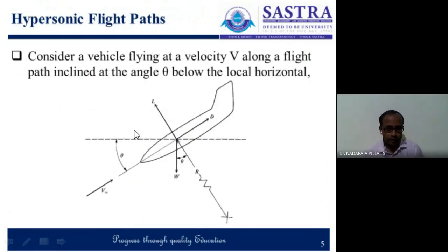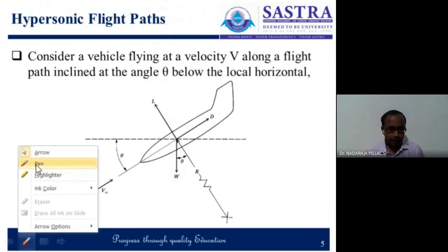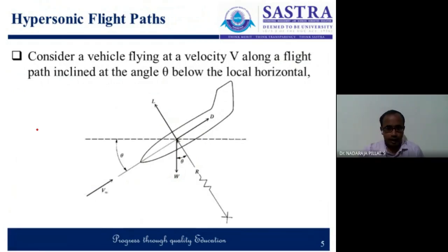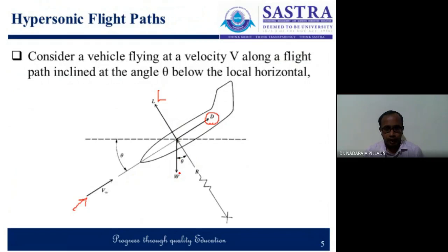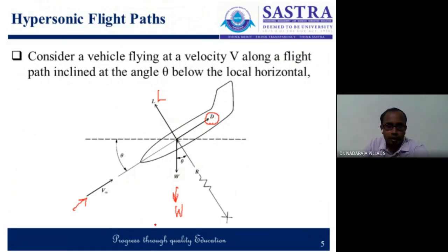So let us consider a flight which is gliding. This is a free stream velocity V-infinity, and in the direction you have a drag force and here you have a lift force, and the weight is acting downwards. We can say that this is a horizontal line and the flight path makes an angle theta.